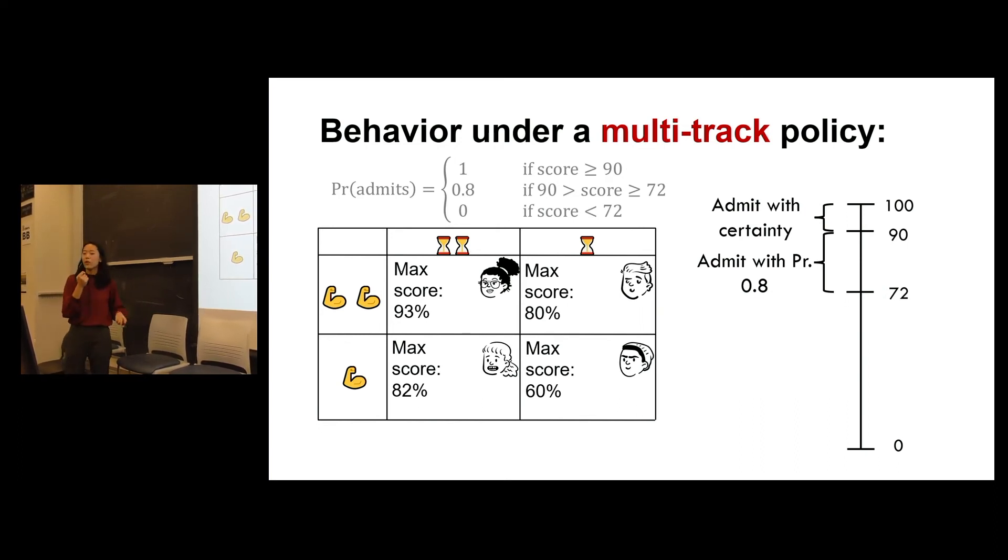In this simple toy example, this just translates to this. The student with the max potential score, she can reach 90. She can choose to put in the effort that allows her to reach 90 and be happy about it.